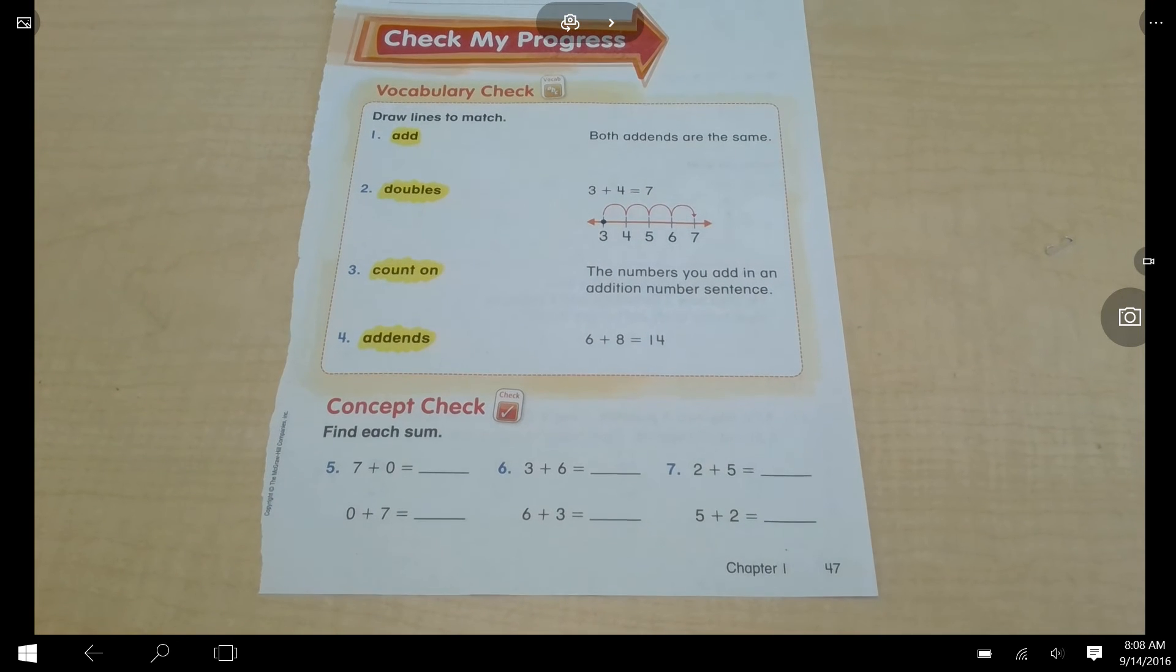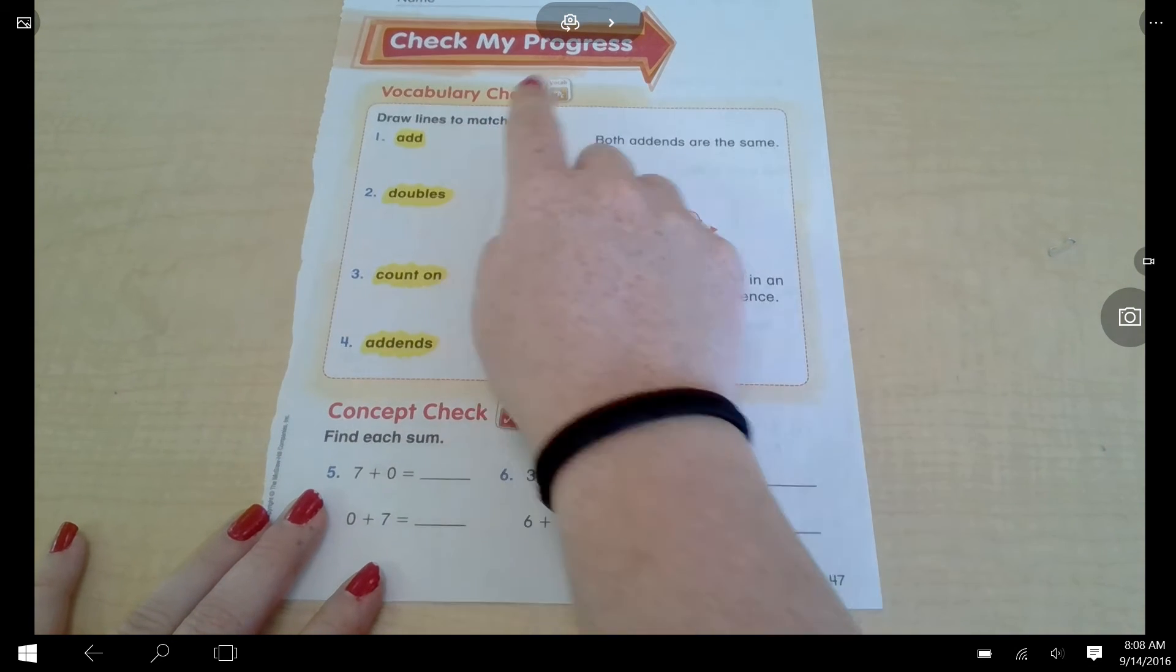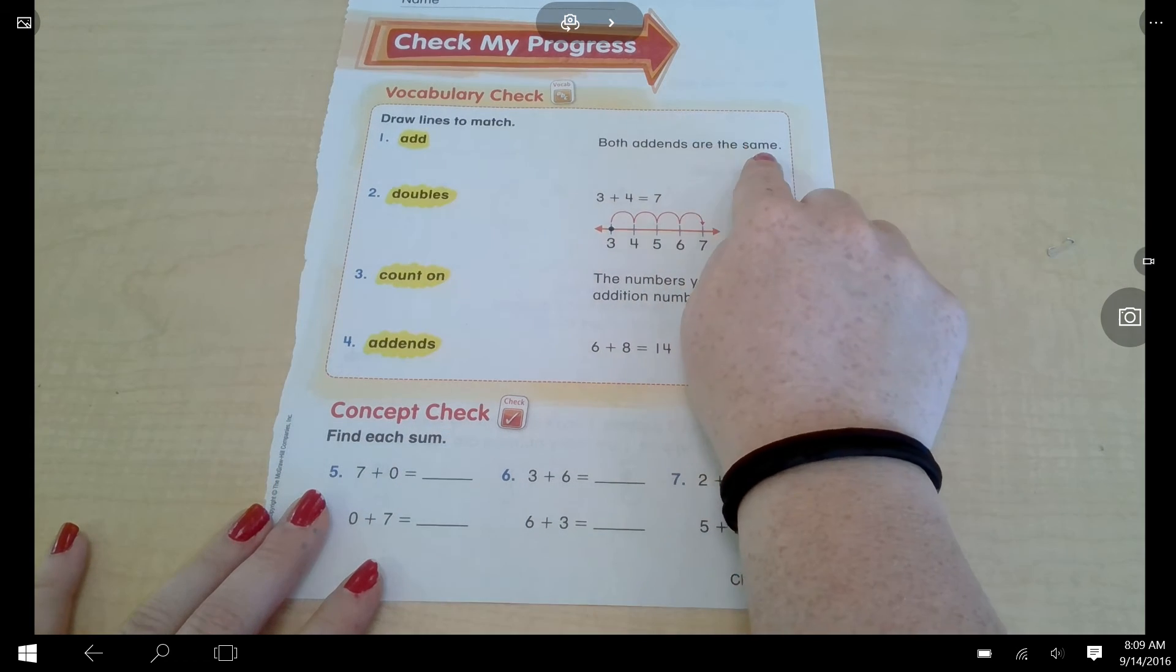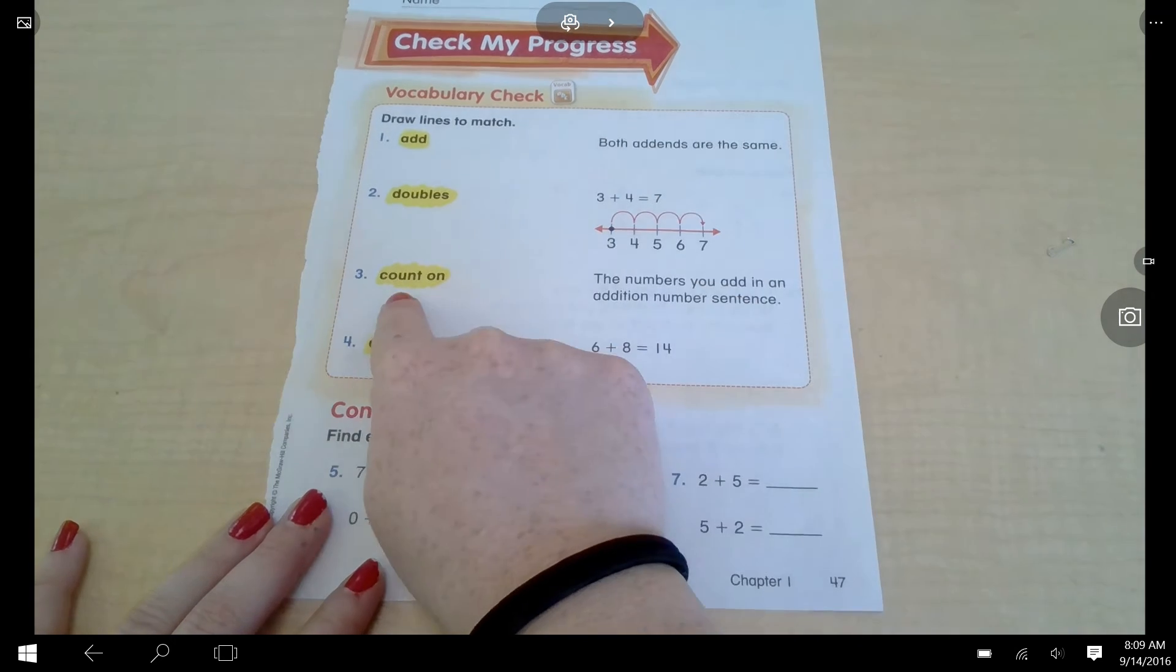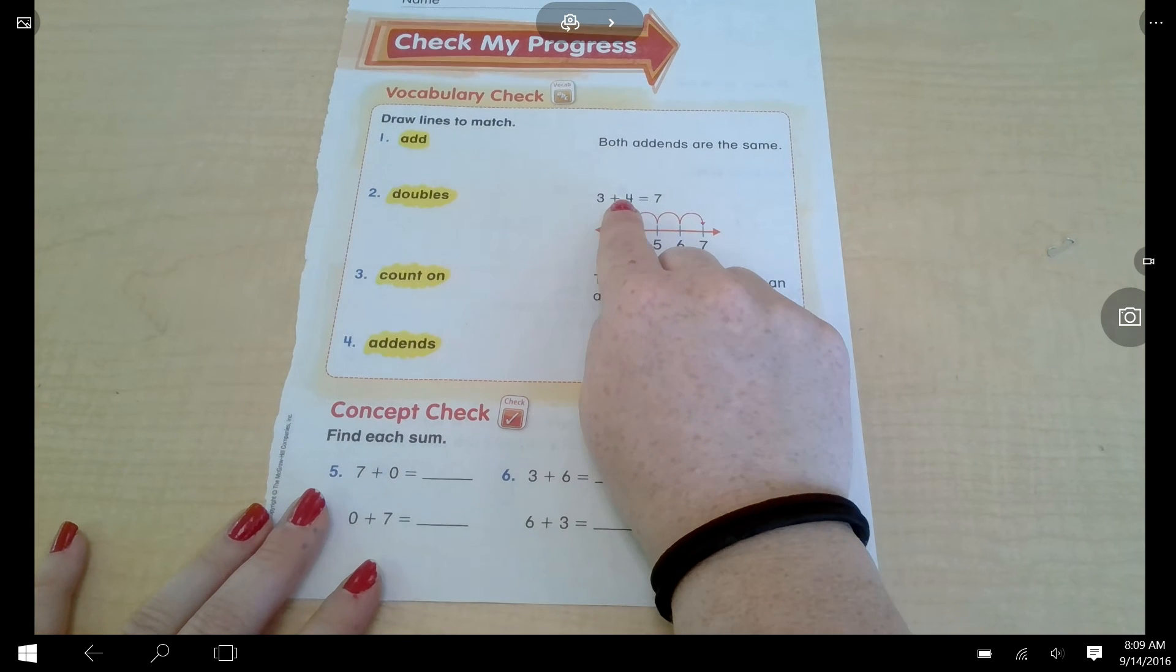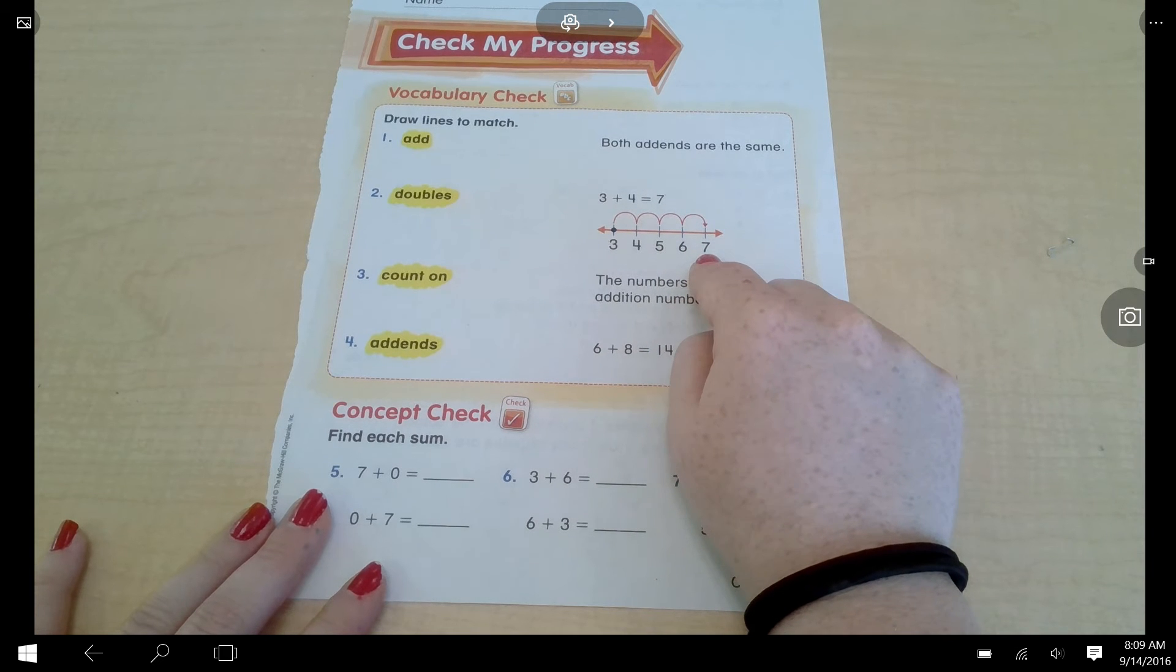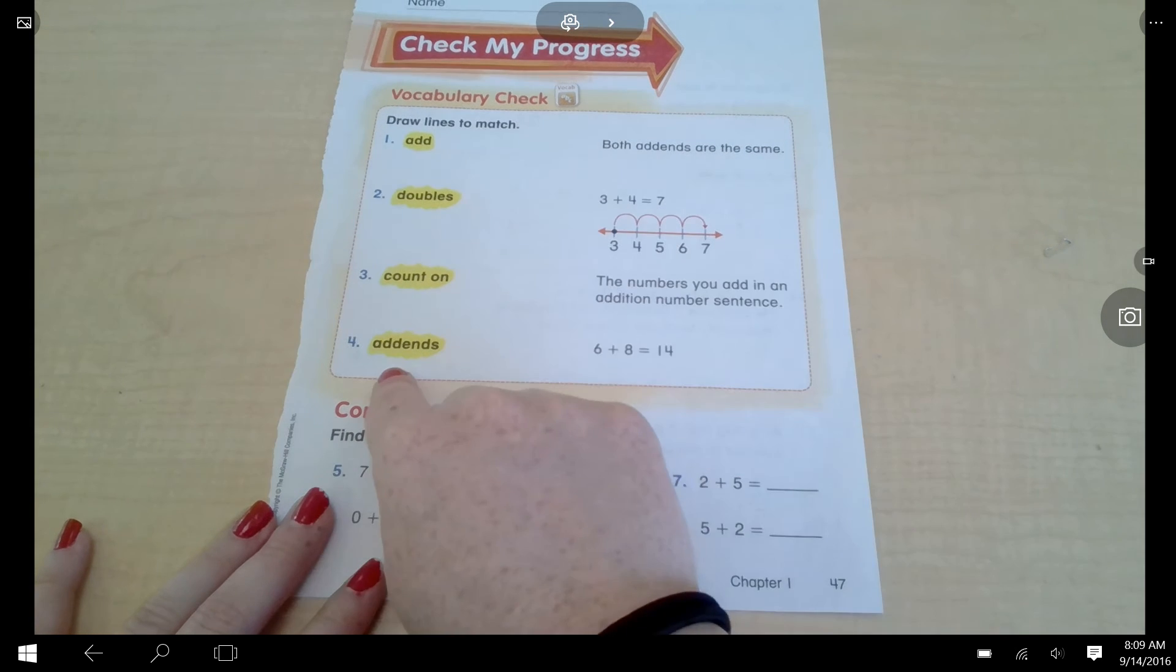Because this is for me to see what you know, not what this helmet knows. I'm just going to read the directions to you. So now let's look at the directions. It says draw lines to match. I'm going to read the definition first and then read the words on the left side. Both addends are the same, is that add? Both addends are the same, is that doubles? Both addends are the same, is that count on? Both addends are the same, is that addends? Try your line now. Three plus four equals seven and then it has a number line with it. It starts at three, counts up four: one, two, three, four, and ends with the sum seven. Is that the number line showing add? Is the number line showing doubles? Is the number line showing count on? Is the number line showing addends? Try your line now.